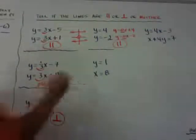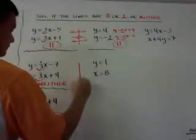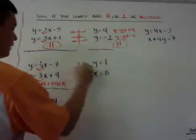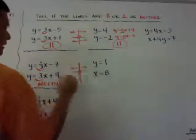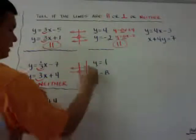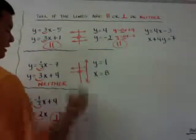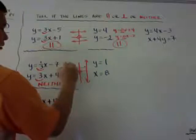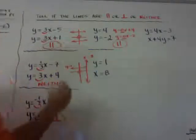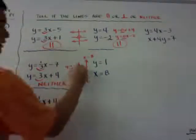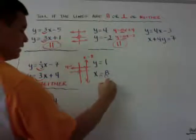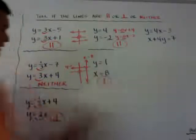Another tricky one: y equals 1 is a horizontal line here, and x equals 8 is a vertical line. You can see that they are going to be perpendicular lines.